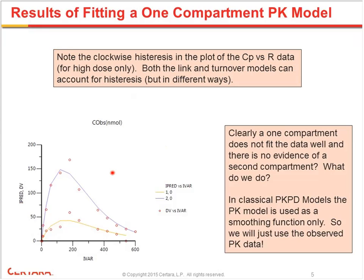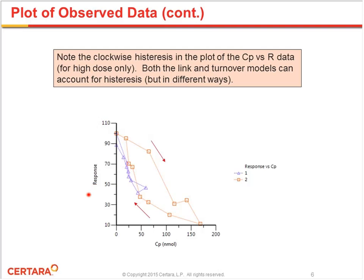Here we're looking at the corresponding hysteresis curve — plotting plasma concentration versus response. At the low dose, there's very little evidence of hysteresis, which can happen when you haven't given a dose high enough to have a marked change in response. At the higher dose, where the response drops far lower, we see a pronounced clockwise hysteresis. When we use this table function approach, it's also applicable to situations where hysteresis is actually present, making it a pretty powerful paradigm for modeling situations like this.